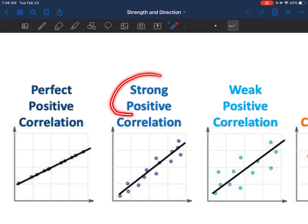This is a strong positive correlation. I draw the line and it touches many of the points, and there are some points above and below, but they're still pretty close to that line.